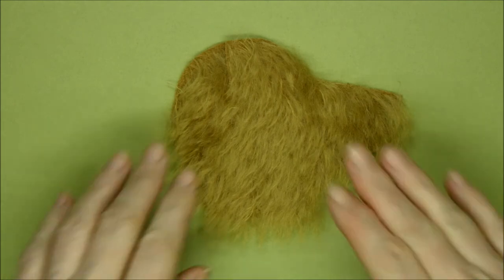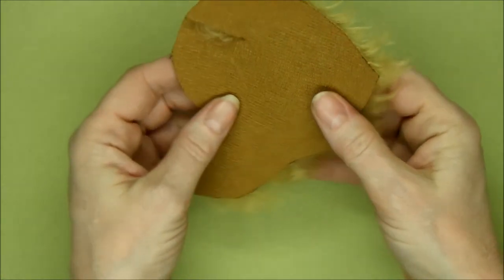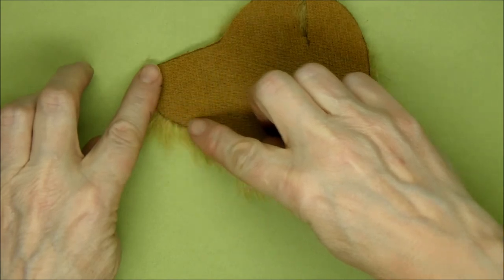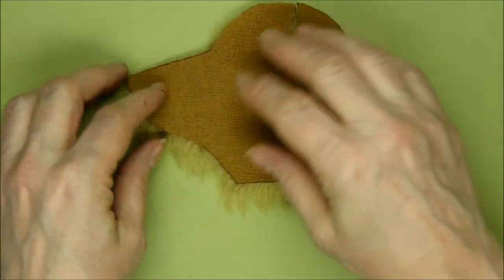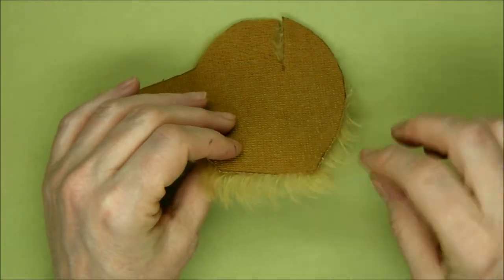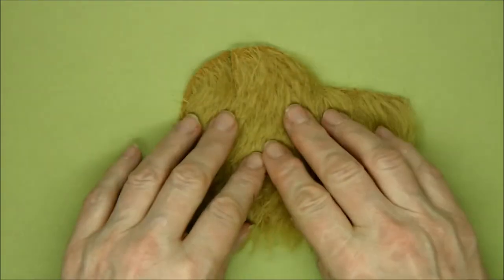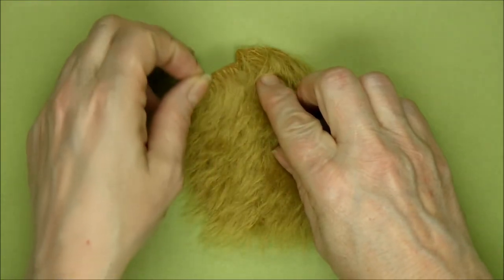And we go all the way around until we end up with this. Now if I turn it over, you can see the pile showing all the way around where we haven't cut through it. That's perfect. That's just the way you want it to be.